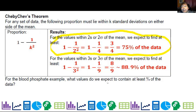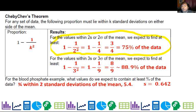And I want three fourths within two standard deviations of the mean, which is 5.4. Well, how big is the standard deviation? Well, we already figured it out is 0.642.